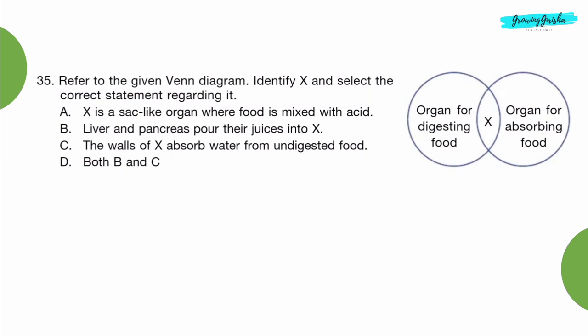Question 35: Refer to the given Venn diagram. Identify X and select the correct statement regarding it. Option B: Liver and pancreas pour their juices into X.